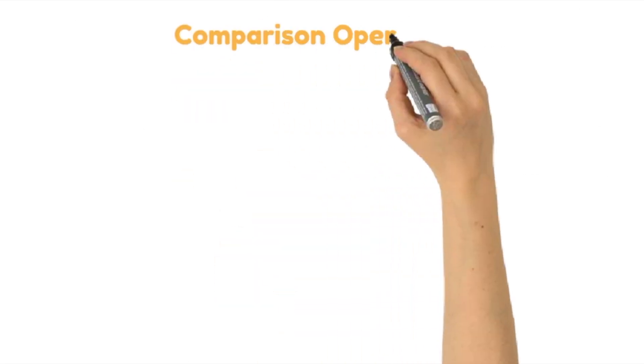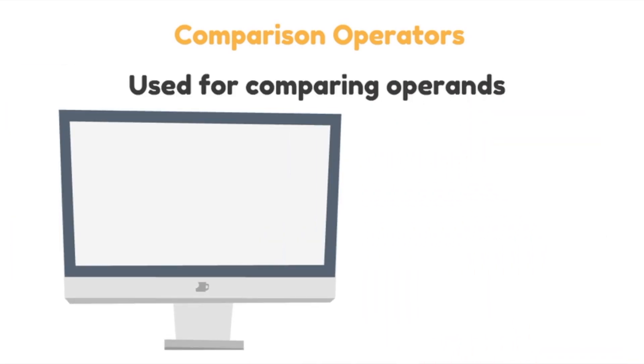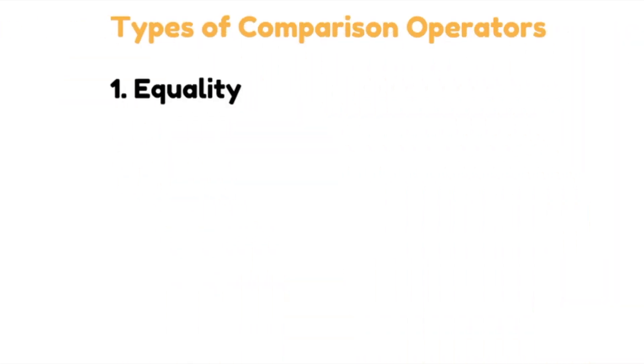Let's talk about comparison operators. Comparison operators are used for comparing the values of operands. If the comparison holds, Python returns true. If the comparison doesn't hold, Python returns false. Let's talk about the different comparison operators.